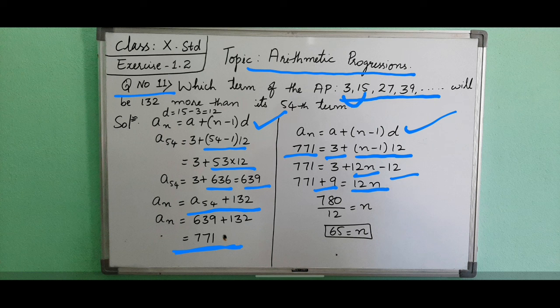If you divide 780 by 12, because 12 is in multiplication, when we are shifting, it becomes division. 12 ones are 12, then 12 sixes are 72. 6 will remain, 6 and 0 will become 60, then 12 fives are 60. So n we are getting here as 65.